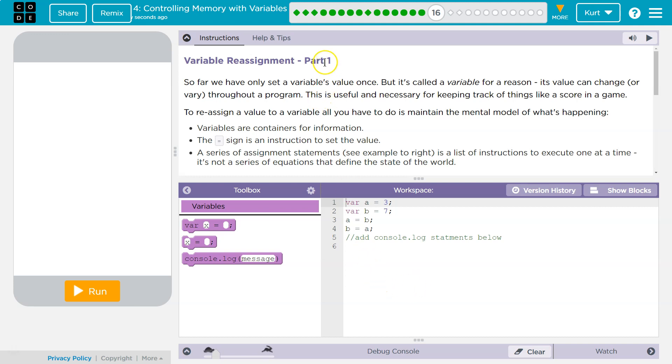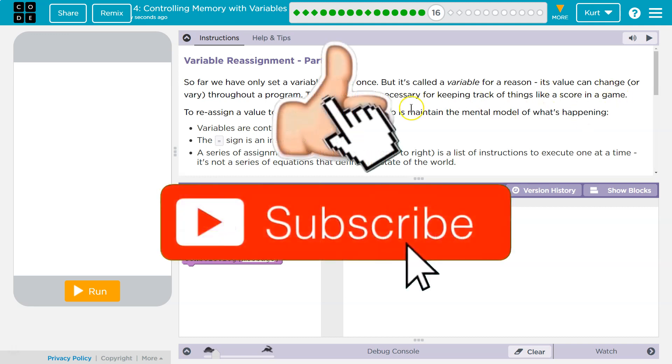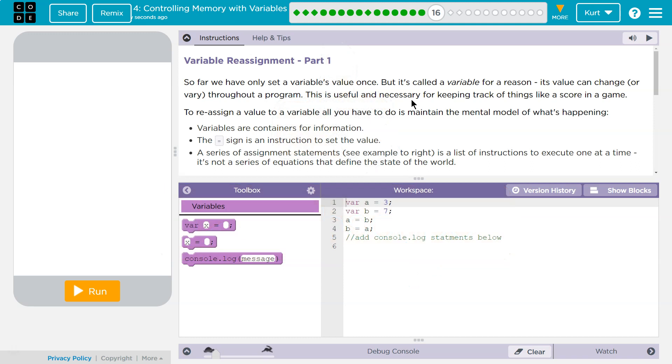Variable Reassignment Part 1. So far we have set a variable's value once, but it's called a variable for a reason - its value can change or vary throughout a program. This is useful and necessary for keeping track of things like score in a game, lives, health, if a smoke detector's gone off - a billion things. To reassign a value to a variable, all you have to do is maintain the mental model of what's happening.